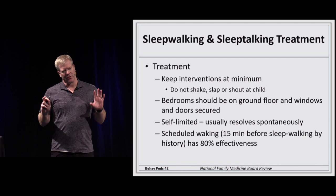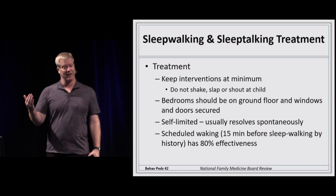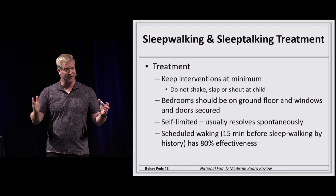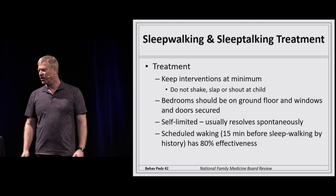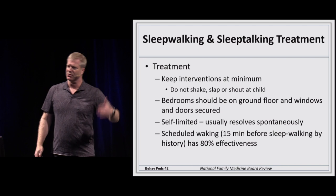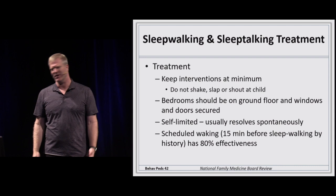Regarding bedwetting: the correct answer is that it occurs during non-REM sleep. Primary nocturnal enuresis is where the child has never been consistently dry through the night — it is more common and less likely to have a pathological cause. Secondary enuresis occurs after six months of dryness. If a child who has been dry for six months starts wetting the bed again, investigate a secondary cause such as a UTI or small bladder.